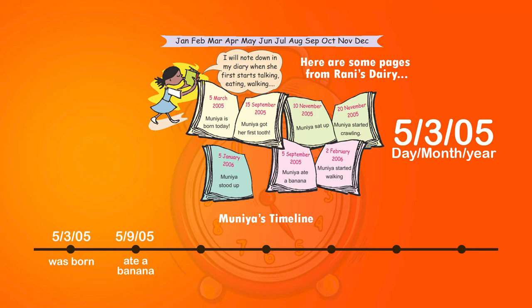The next entry is 5th September 2005. The pages are jumbled up so we need to go in the correct order. On this day she ate a banana. September is the ninth month, so we write it as 5/9/05, and below that we write 'ate a banana.' On 15th September 2005 she got her first tooth, so we enter this as 15/9/05 and write 'got first tooth.'